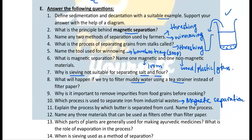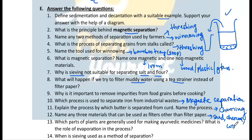Question 12: Explain the process by which butter is separated from curd. The process is churning — you will need to explain that. Question 13: Name any three materials that can be used as filters other than filter paper. Sand, charcoal, and cotton cloth can all be used as filters.